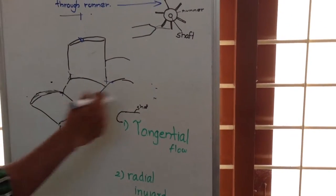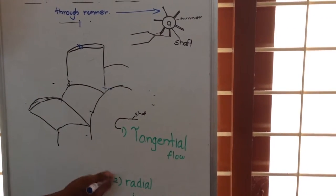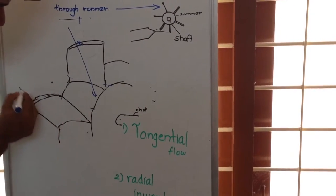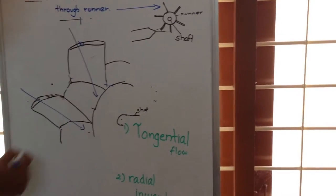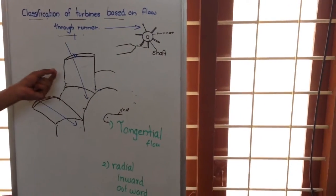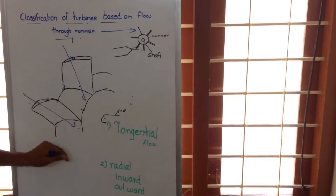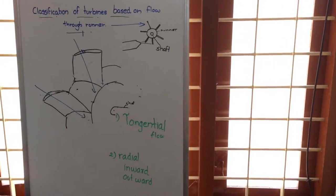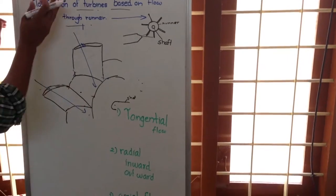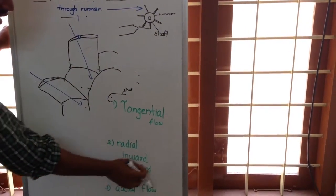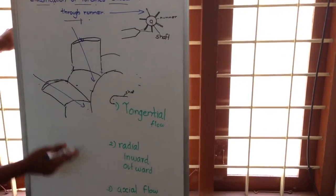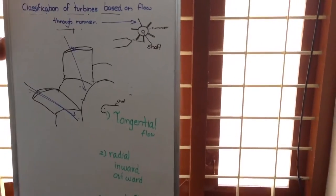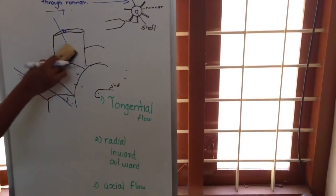In radial flow turbines, the water is moving in a radial direction — towards the centre or outward. If water is flowing radially inward, we will call it radial inward flow turbines, and if water is moving outward, we will call it radial outward flow turbines.